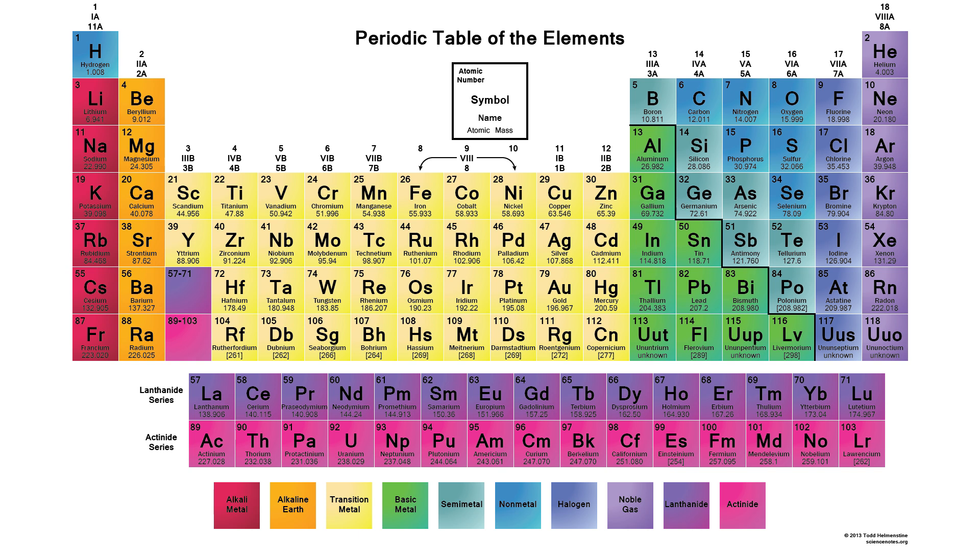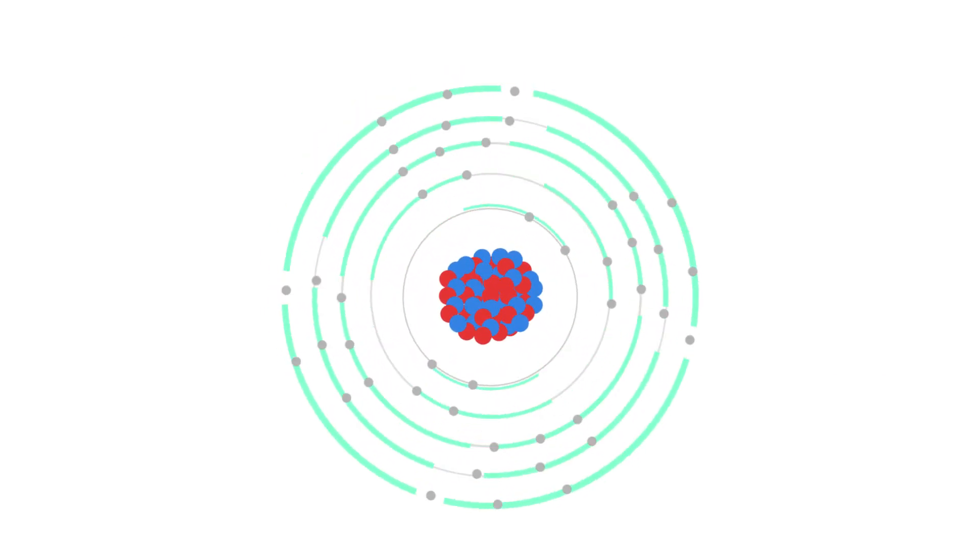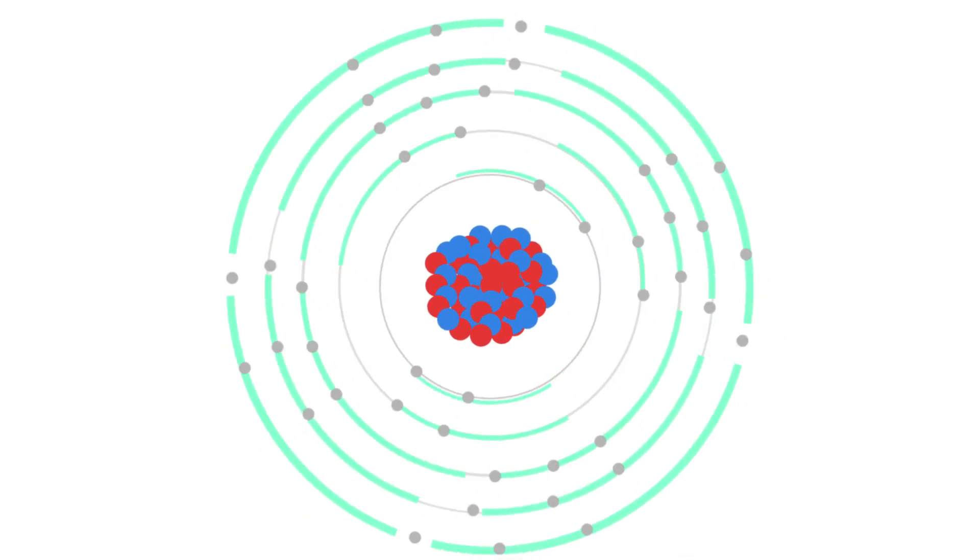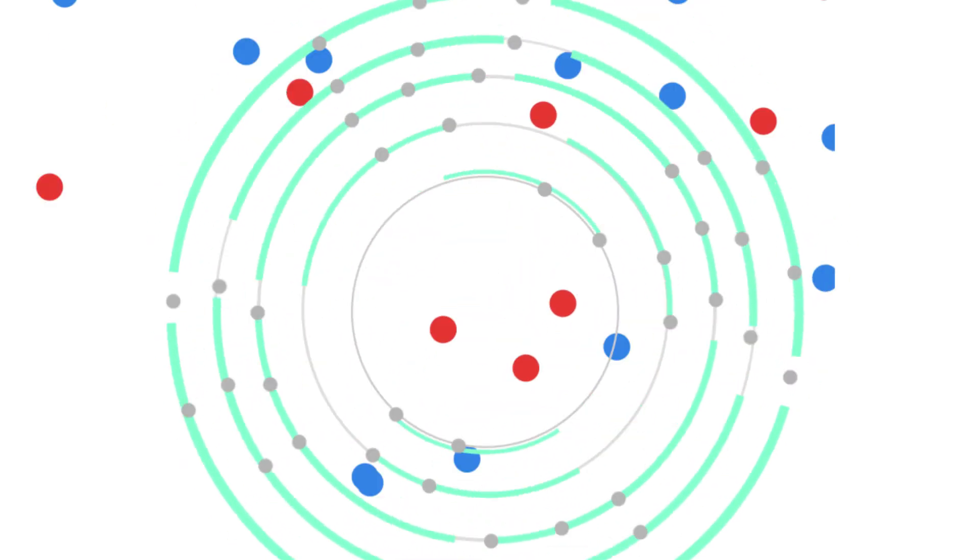Theoretically, the periodic table could go on forever, as atoms get more and more massive. But very heavy atoms are not stable, and fall apart easily.